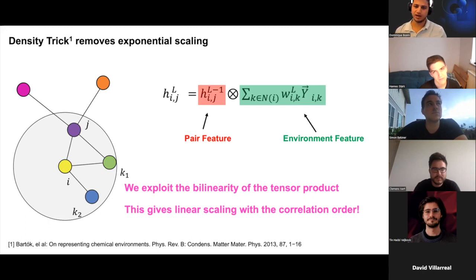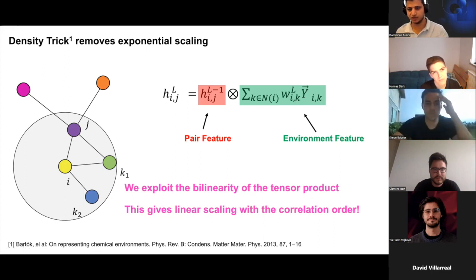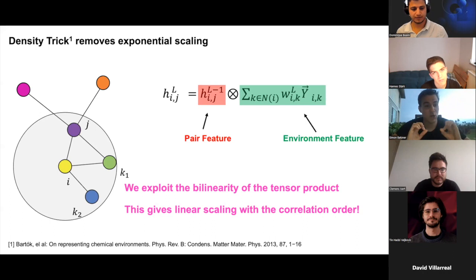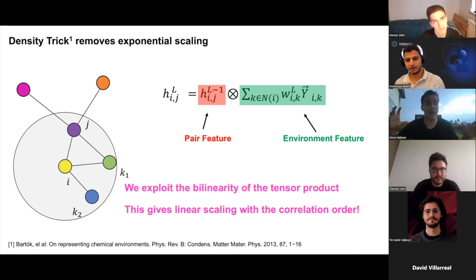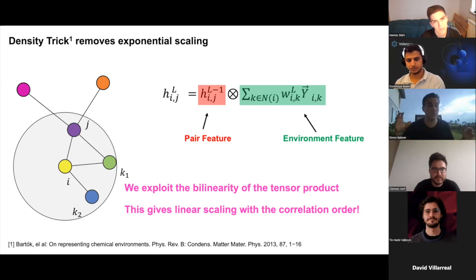A challenge is raised about long-range interactions: for example, magnetism requires looking at global alignment of a crystal, not just a 5-atom radius. While most interesting quantum effects are local (within ~5-6 Ångström), for genuinely long-range interactions like Coulombic terms, the approach is to decompose the total energy into a local messy quantum term plus a separate long-range term.